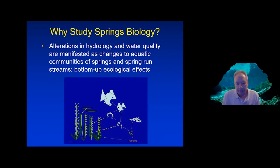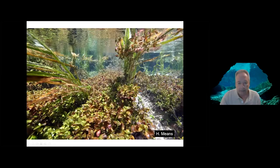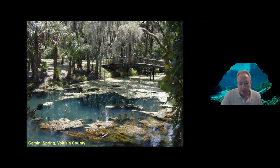Why do we study springs biology? By studying springs biology we can see changes that occur in terms of hydrology and water quality. These are manifested in community changes from the bottom of the trophic level up the food chain to the top. Historically, healthy springs had abundant macrophytes with associated aquatic fauna. What we're seeing today with changes in nutrient inputs and flows are dramatic effects on these communities — a domination by algae, a loss of macrophytes, with significant consequences for the entire fauna.